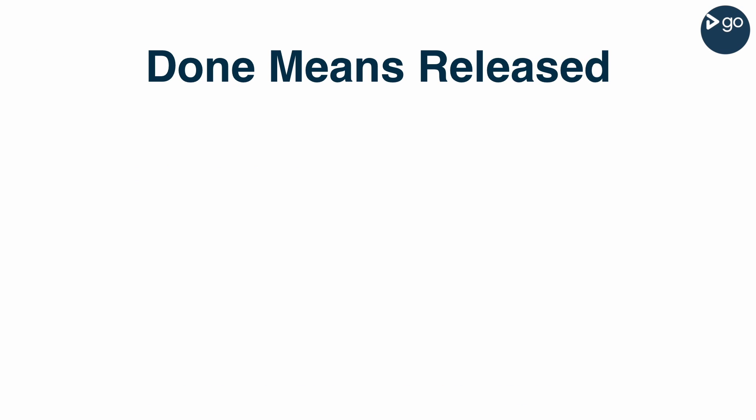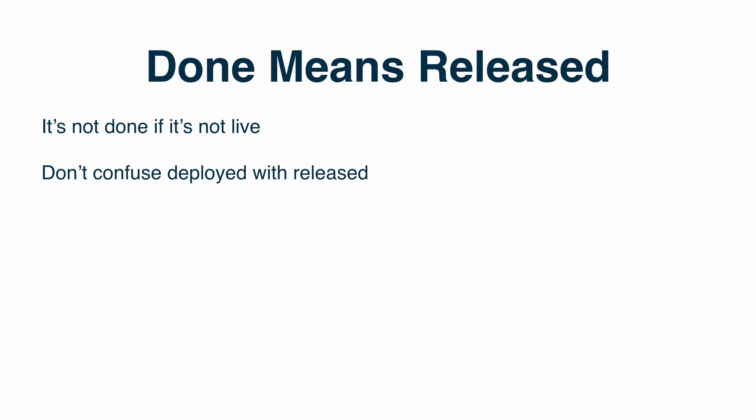You've all heard people say things like, it's done except for that one thing, or I just need to do something small. The definition of done has been one of the larger debates in Agile circles for quite some time. With continuous delivery, it's not done if it's not live. It's important that we don't confuse deployed with released. You can deploy code that users don't see as often as you like. It's only released when the users can actually use it.